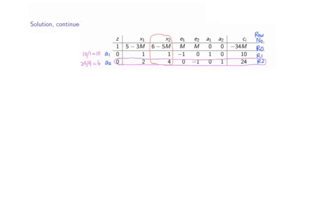Now, we locate that the key column is the column containing x2 since the coefficient here is the most negative among all the coefficients of the variables in row 0 because M is a huge number. The key row is the second row because this ratio is positive and is the smallest.